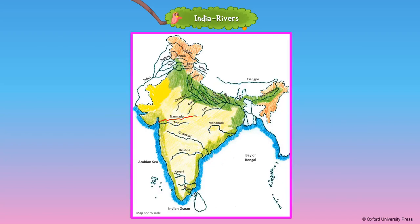The Narmada is a river in Central India. It separates North and South India and empties into the Arabian Sea. The Tapti is one of the major rivers of Central India. Its river basin lies in the states of Maharashtra, Madhya Pradesh, and Gujarat.